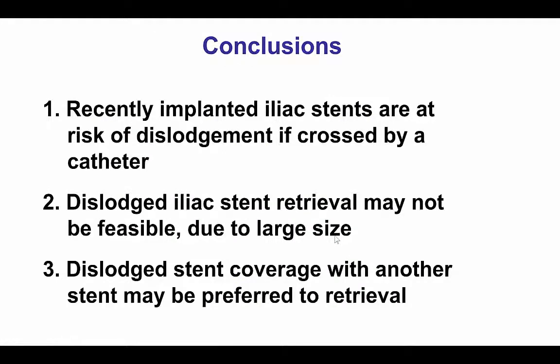This case demonstrates a potential complication if there are recently implanted or even old iliac stents — advancing a catheter through those stents can dislodge them, causing embolization into the aorta or other large vessels. Therefore, one should be very careful about patients with iliac stents. If known, crossing should be performed with extreme caution under fluoroscopic guidance. Ideally, a 45 cm long sheath — now commonly used in CTO interventions — should be advanced through those stents to prevent any effect on previously placed iliac stents.